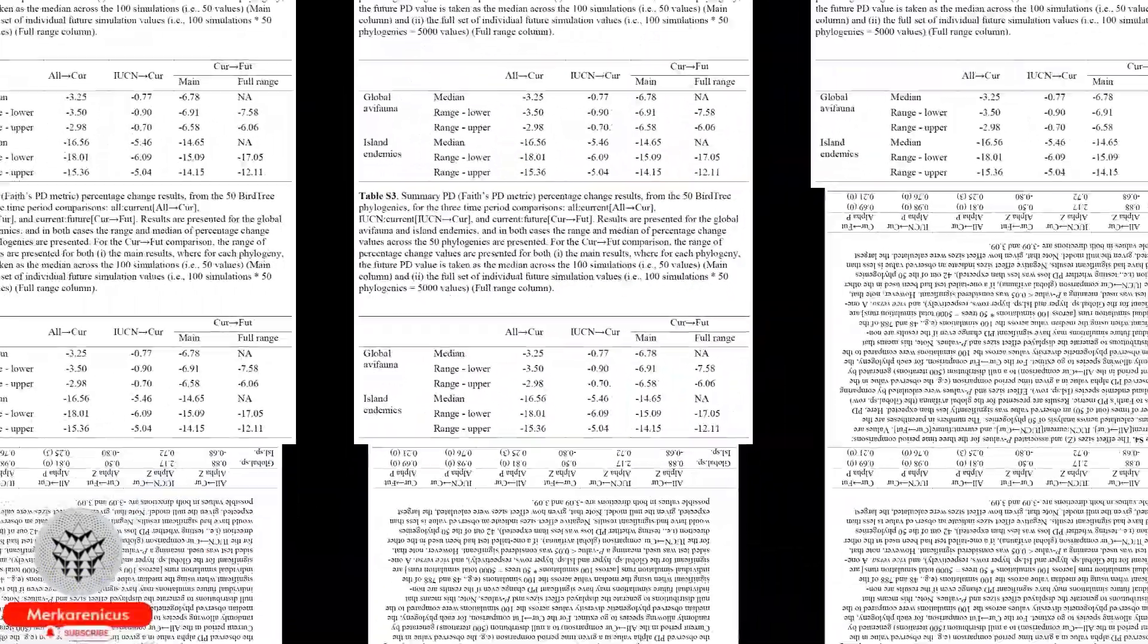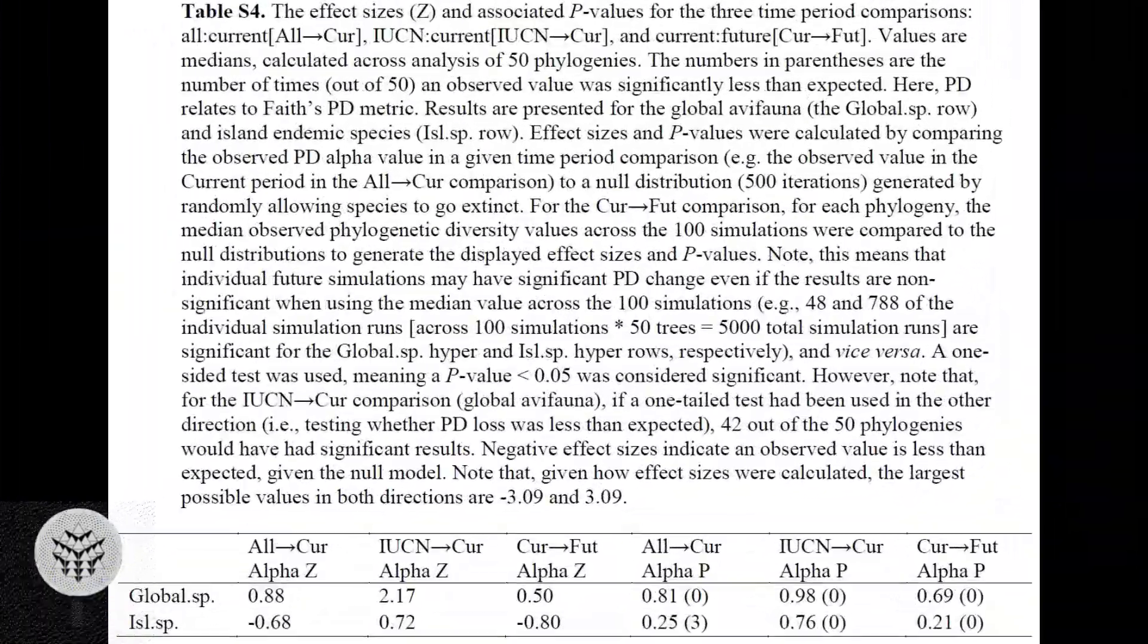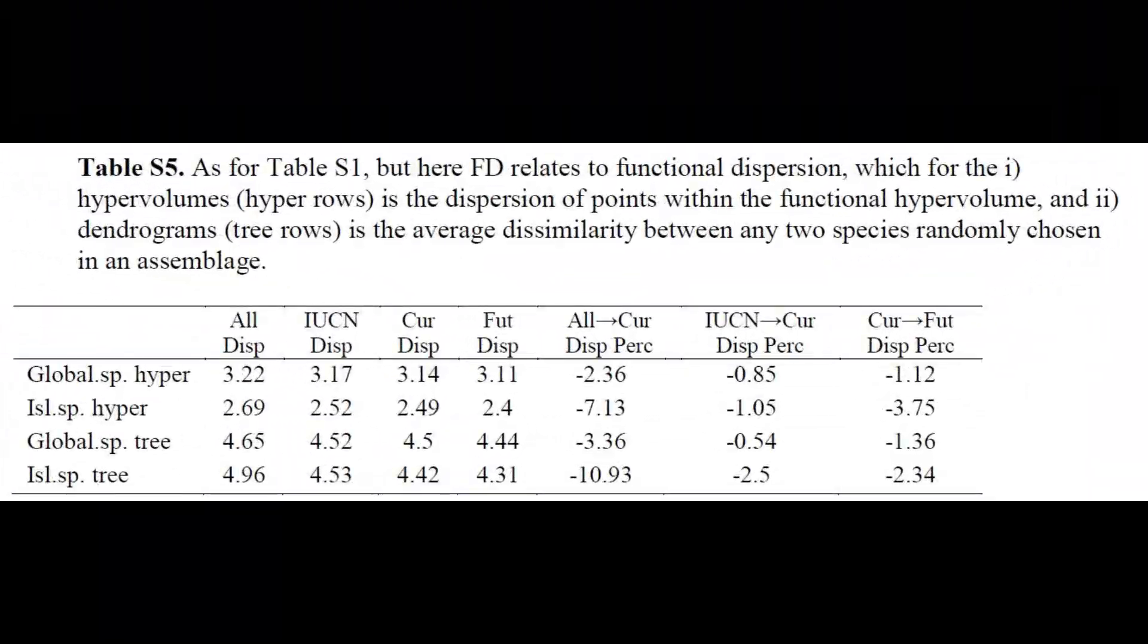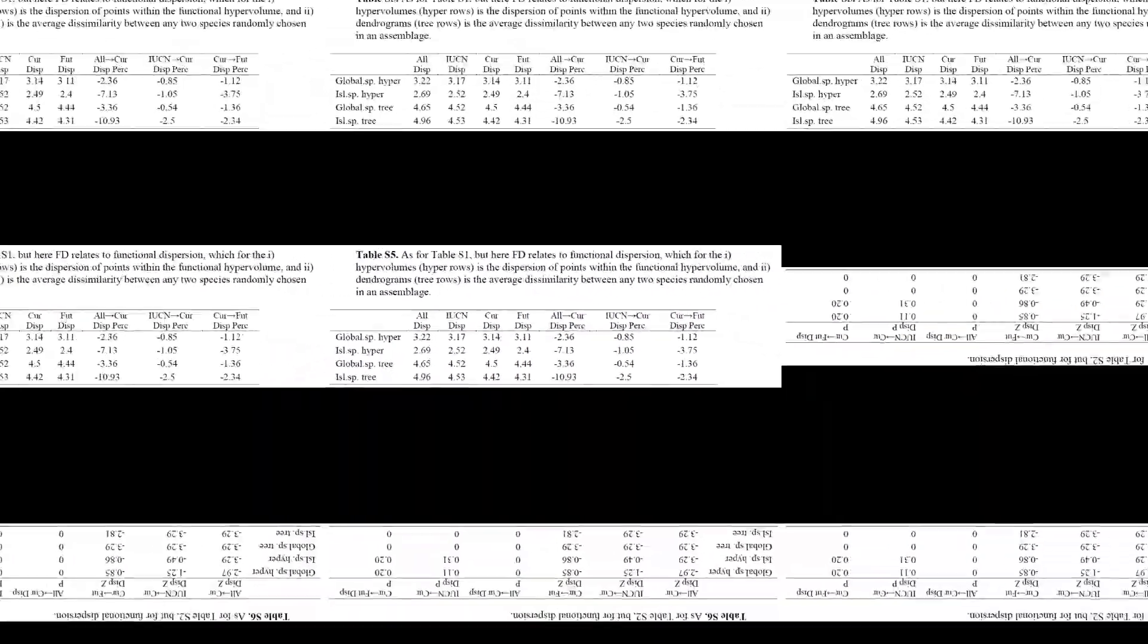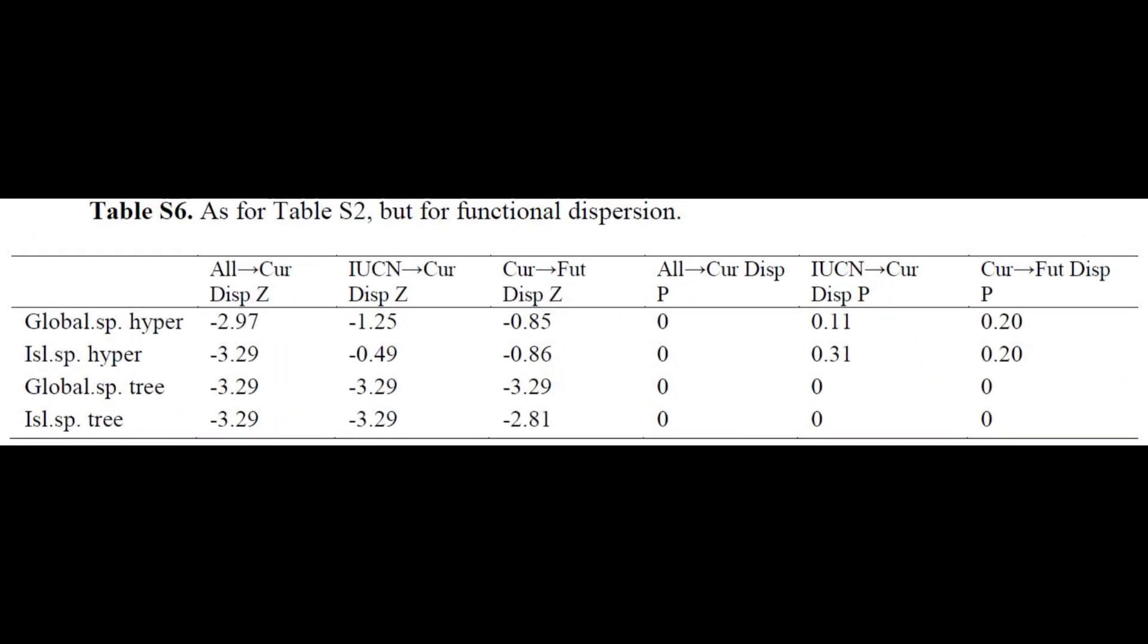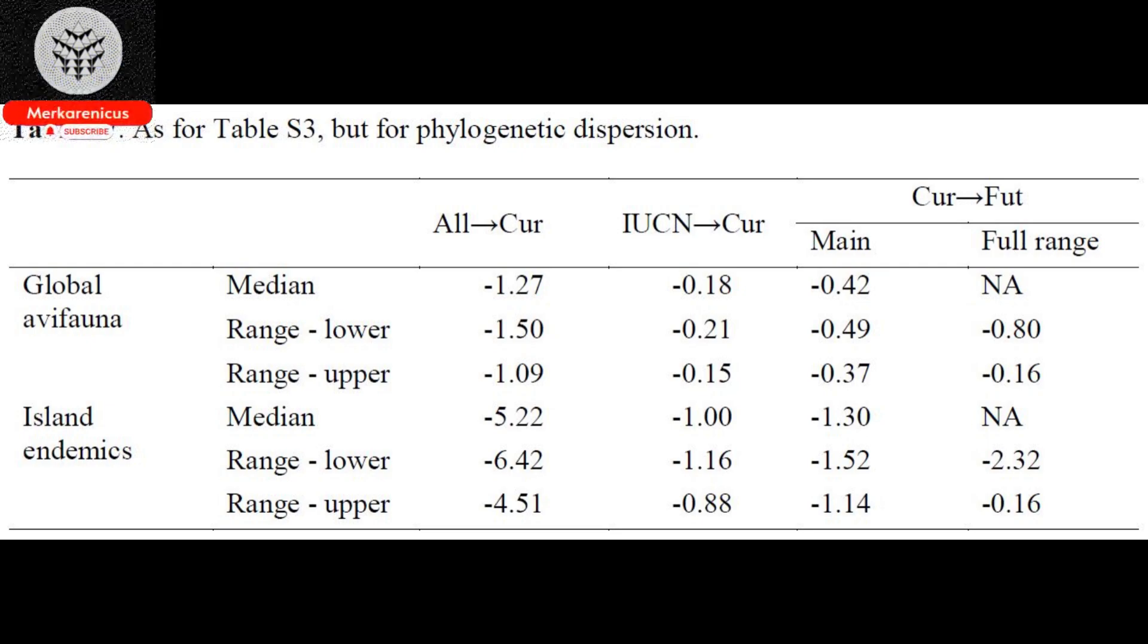The study examines not only the sheer number of extinctions but also the broader implications for the planet. Dr. Tom Matthews, the lead author from the University of Birmingham, articulated that the significant number of bird species that have gone extinct is undoubtedly a crucial aspect of the extinction crisis.